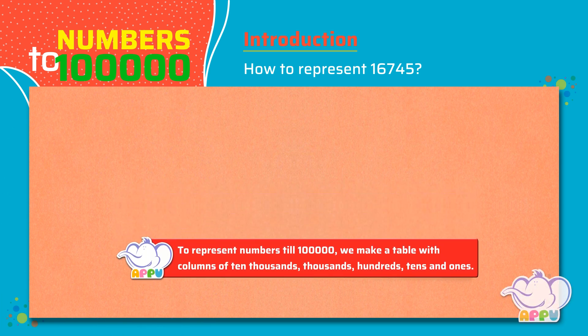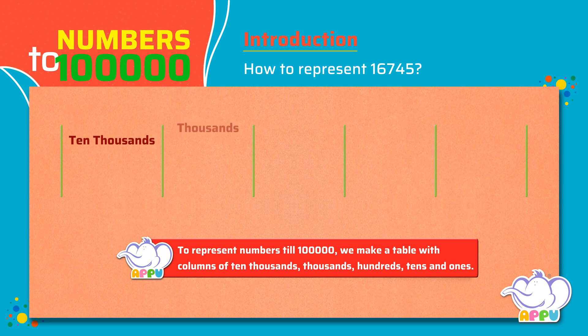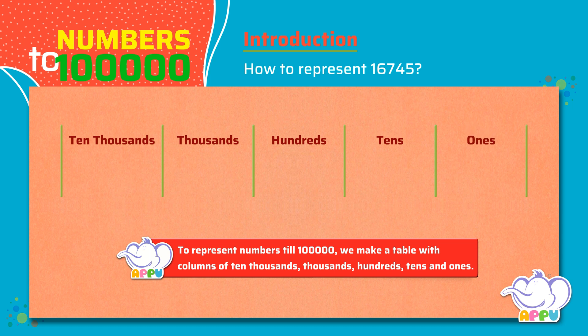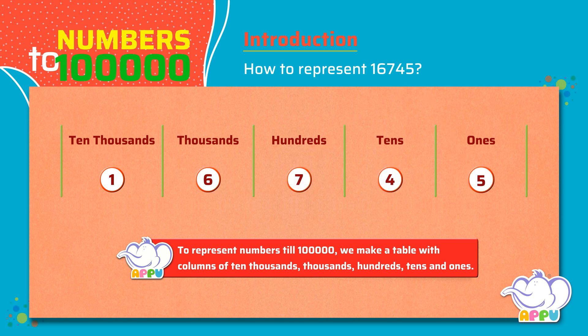To represent a 5-digit number, we make a table of ten thousands, thousands, hundreds, tens, and ones. So, 16,745 can be represented as one ten thousand, six thousands, seven hundreds, four tens, and five ones.